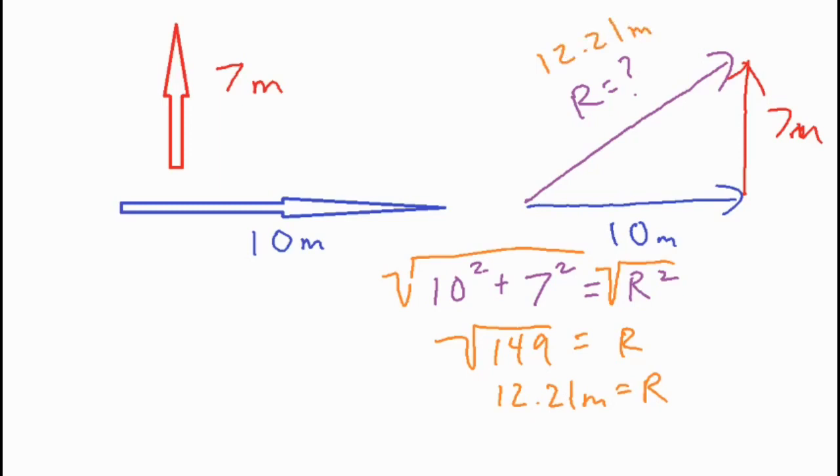Now the second thing you may need to solve for is finding a direction. So we want to find the exact angle between these different vectors. And what you can do is you can use an inverse trig function. You could use any inverse trig function because you have every side of the triangle.